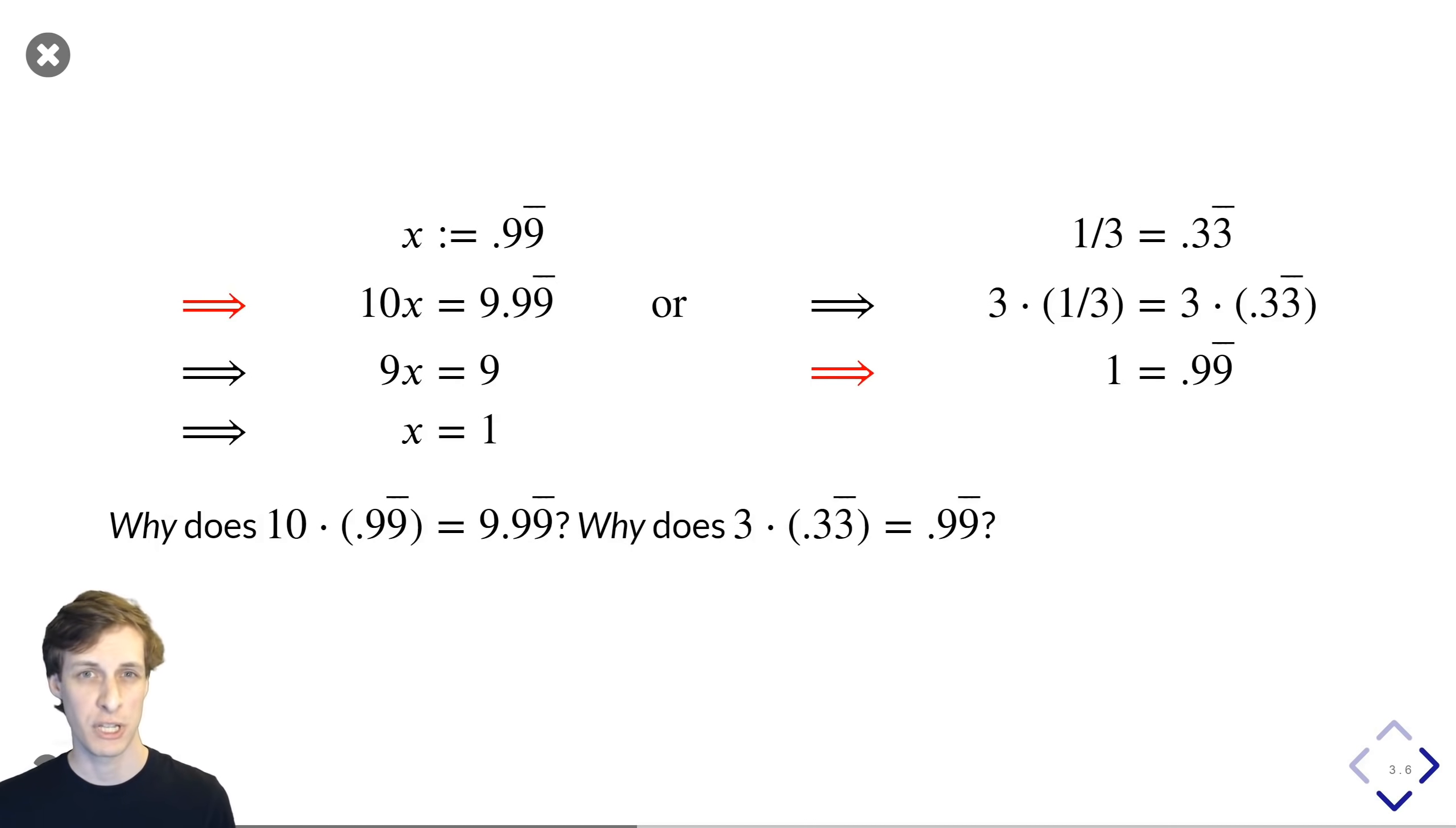After all, you could never finish the computation of multiplying it out. Now again, this is true. You are allowed to do this. But we haven't justified why in this proof. The reason that you're allowed to is actually a fact from calculus, not algebra.